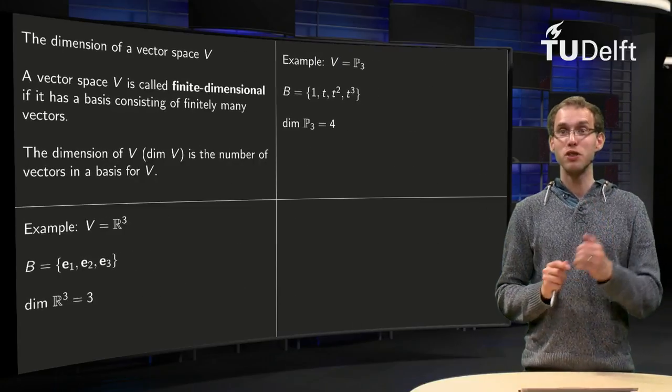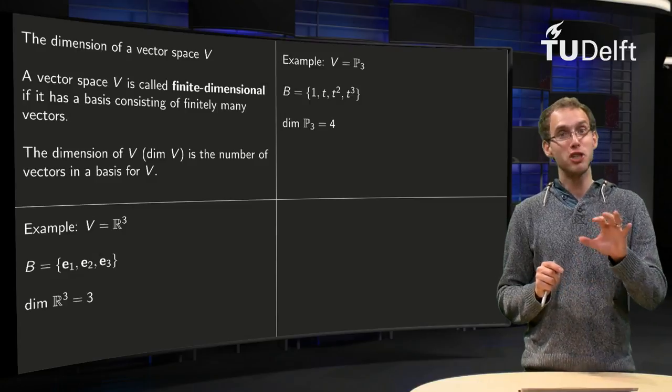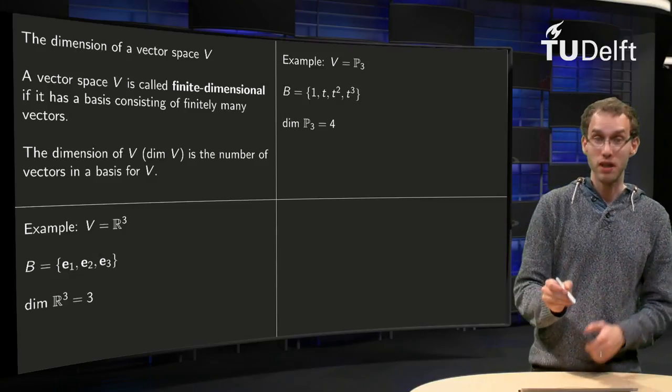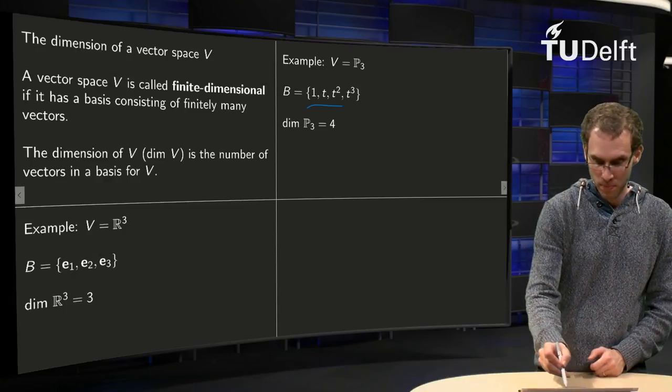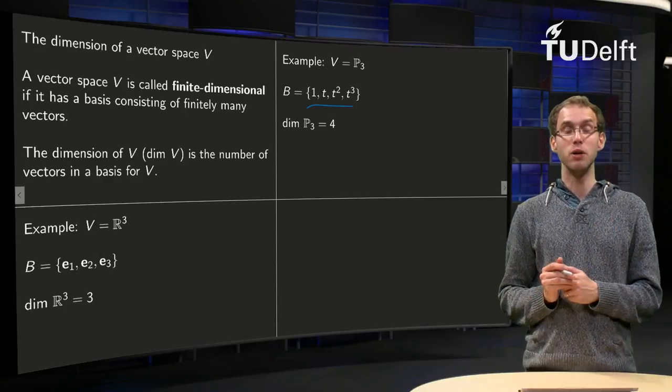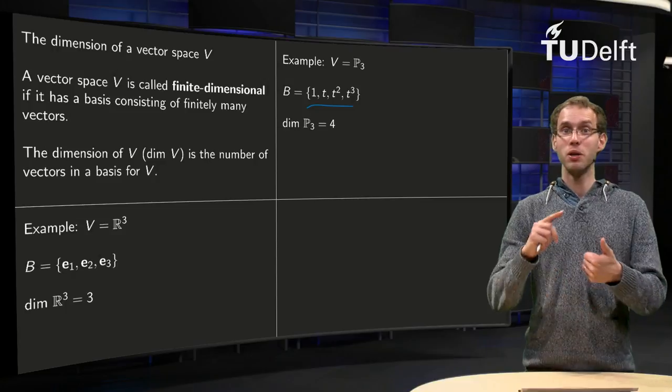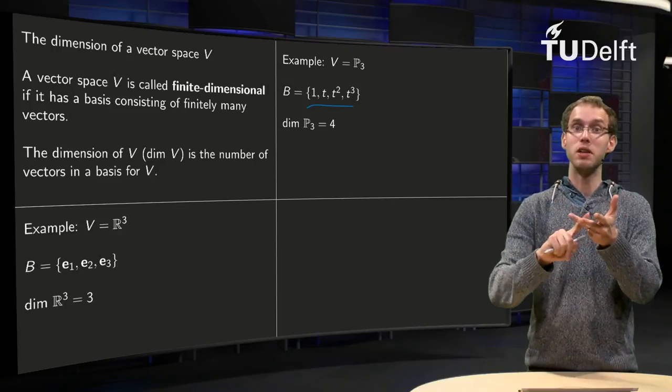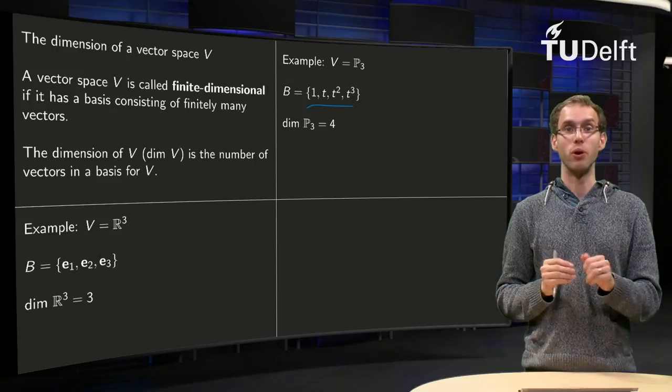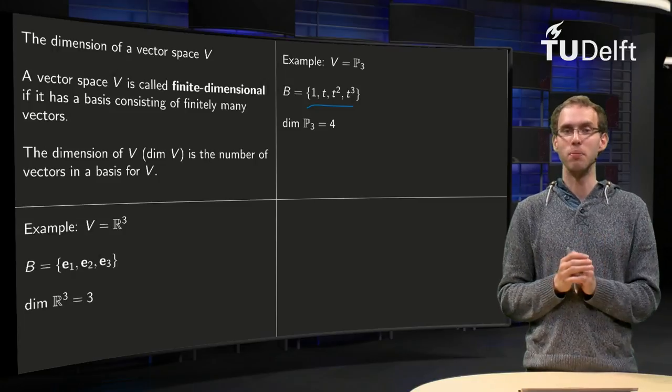So what is the dimension of P_3? We have to be slightly careful here. If you write down a basis, we can take for example again the standard basis: 1, t, t^2, t^3. But then what is the dimension? 1, t, t^2, t^3 - dimension is 4. So the dimension of P_3 equals 4, because you have this extra 1 in your basis.